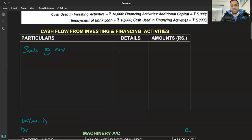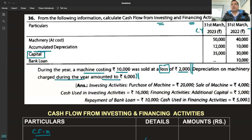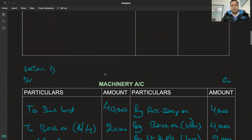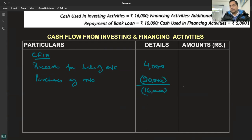Chalo investing nikal lete hain pehle. Cash from investing activities - poora kham bhel payenge na, ab itni si jagah hai dono ke liye. Proceeds from sale of machinery kitne ki bechi - machinery 4,000. Asset ek hi hai aur toh koi asset nahin hai. Toh purchase kari - purchase kitne hai? 20,000. Purchase of machinery purchase kitna hai 20,000. Toh net result kya aaya? 16,000 negative. Toh kya hai yeh - cash used in investing activities.